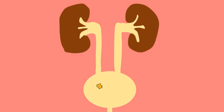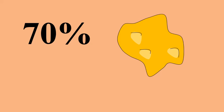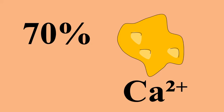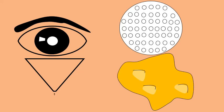About 70% of calculi contain calcium. The size of kidney stones varies from too small to be seen with the naked eye to the size of a golf ball.